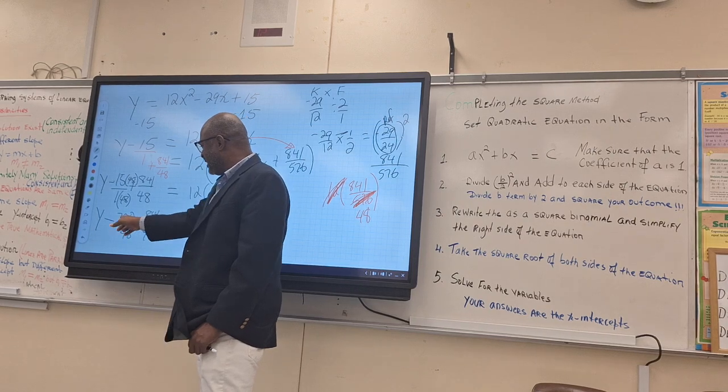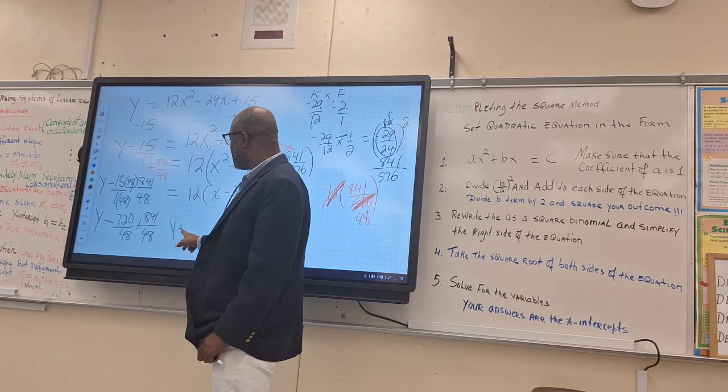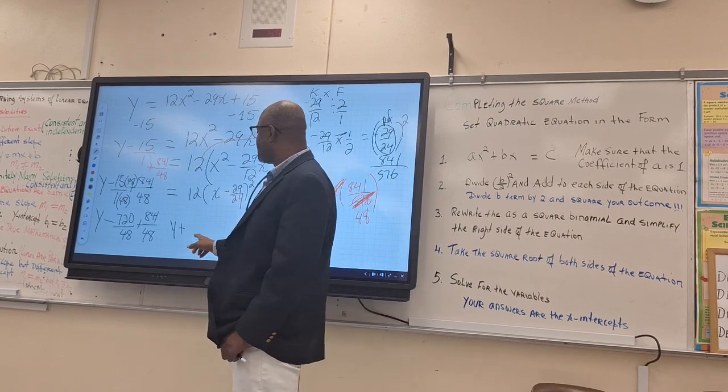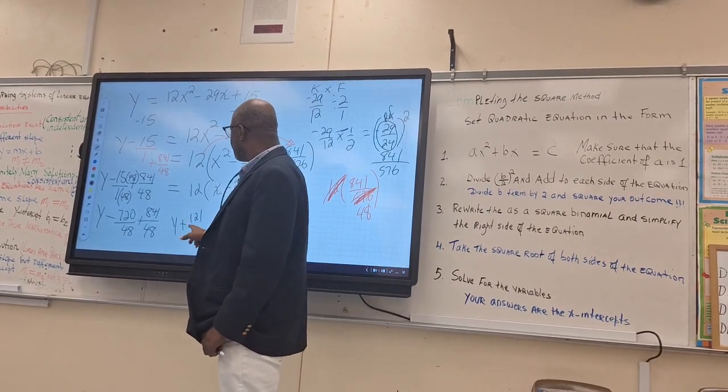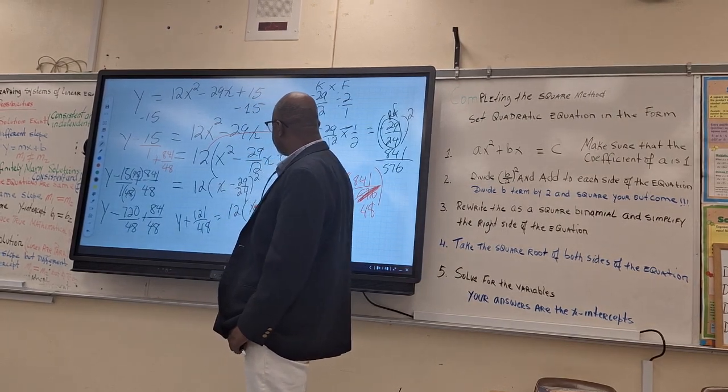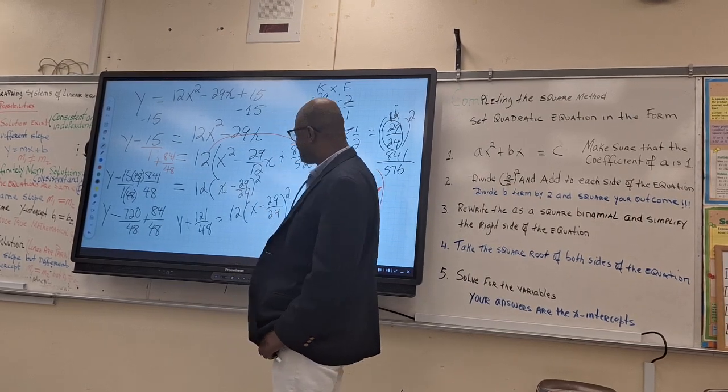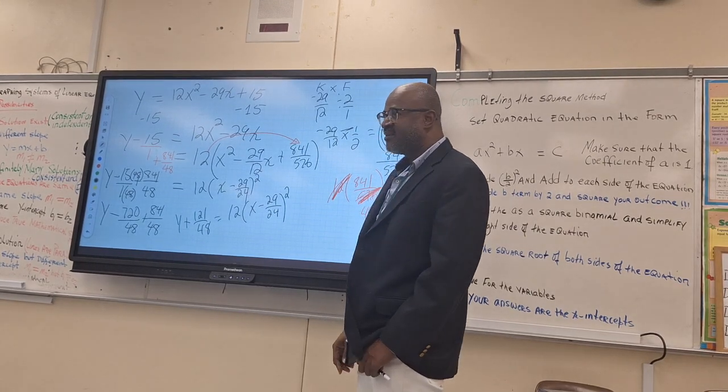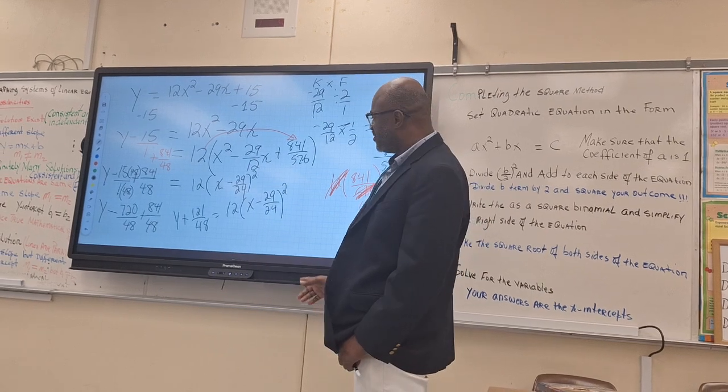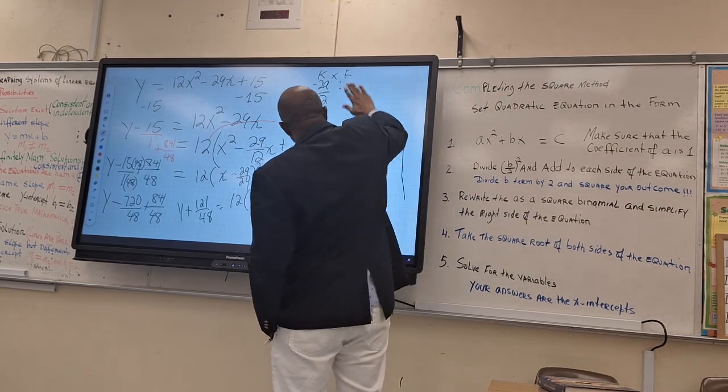So let's go here. We have negative 720 plus 841. I'll give you y plus what? Calculate there, people. So 121 over 48 is equal to 12 times x minus 29 over 24 squared. Now this is your objective. Now we're almost there to put the equation in the standard form.